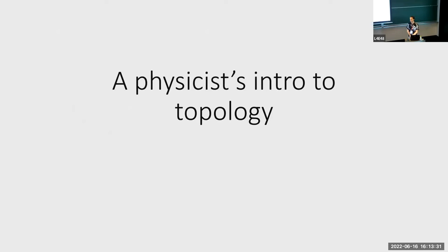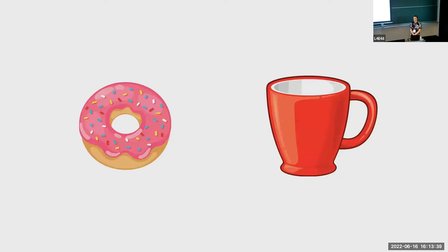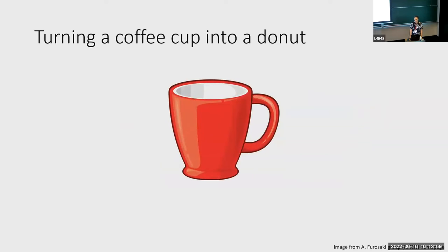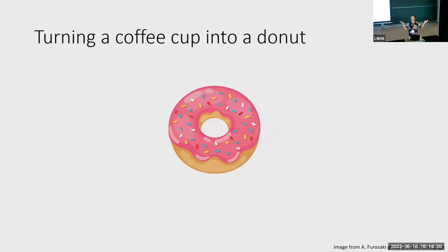Let me proceed to a physicist's introduction to topology — we'll take a math interlude. There's a fairly tired joke that a topologist can't tell the difference between a donut and a coffee cup. That's not a terribly useful statement on its own, so what does it really mean? Within the framework of topology, you can turn a coffee cup into a donut — that's an allowed transformation. Here's a coffee cup. Here's a donut. Look, I turned a coffee cup into a donut! Obviously, this is not a very interesting process to study — I just replaced one with the other.